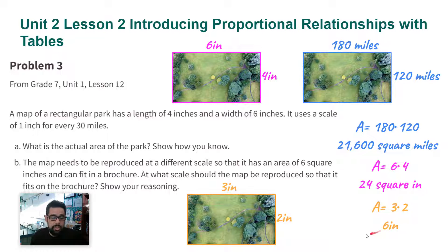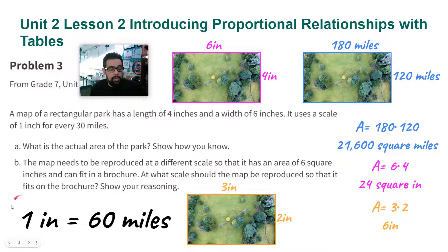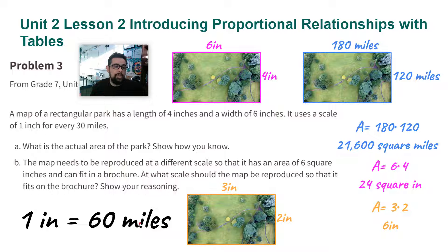Those are the dimensions of the new drawing: three by two, and three times two is six square inches. Because I scaled this by half, notice the scale: the original scale is one inch equals every 30 miles. If I scale the drawing by half — making it half smaller — the new scale becomes one inch equals 60 miles. When you make the drawing half as small, the scale doubles. Thank you, ladies and gentlemen.